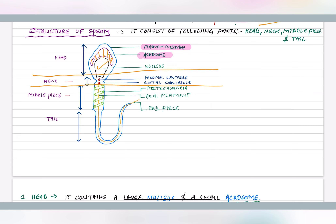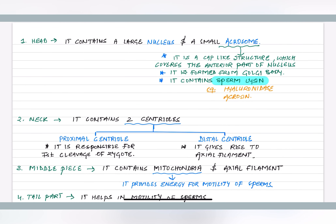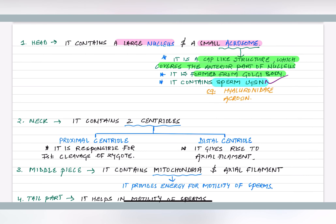The neck region contains two centrioles: the proximal centriole, which is responsible for the first cleavage of the zygote (important, already asked in exams), and the distal centriole, which gives rise to the axial filament. The middle piece contains mitochondria and the axial filament. Mitochondria act as the powerhouse and provide energy for the motility of sperms. The axial filament originates from the distal centriole and extends through the middle piece and tail.